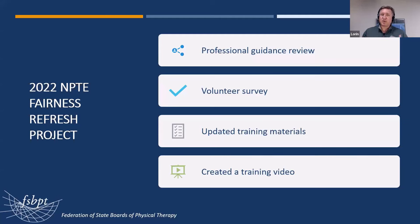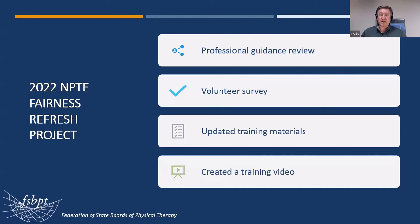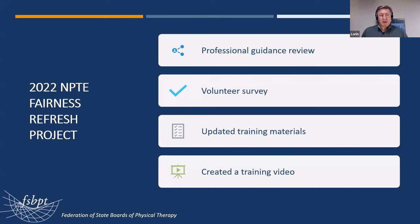Also in 2022, we wanted to make sure our fairness guidelines were up to date with the most current standards as we developed these new items — ensuring fairness to candidates of all backgrounds. That included reviewing professional guidance, conducting a volunteer survey to identify where they felt weak in writing fair items, updating our training materials, and creating a training video to show what was expected in terms of writing and reviewing items.